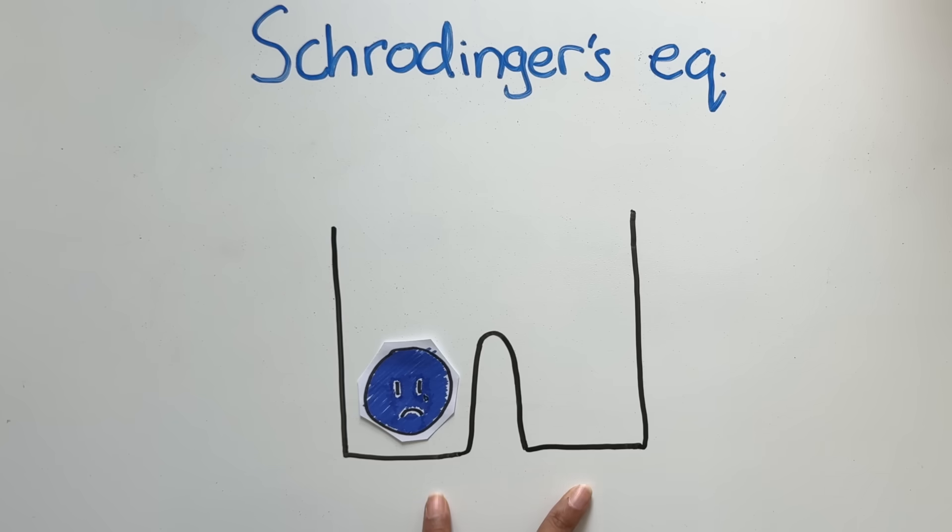There's only two places it could be in this well, it could be on the left well or the right one. But let's say I started off in the left one. But what we want to know is, is it going to stay in the left well, or is it going to do something else in the future? And to find out, we need to use the Schrödinger equation. But before we see the result, let's talk about the sponsor of this video.